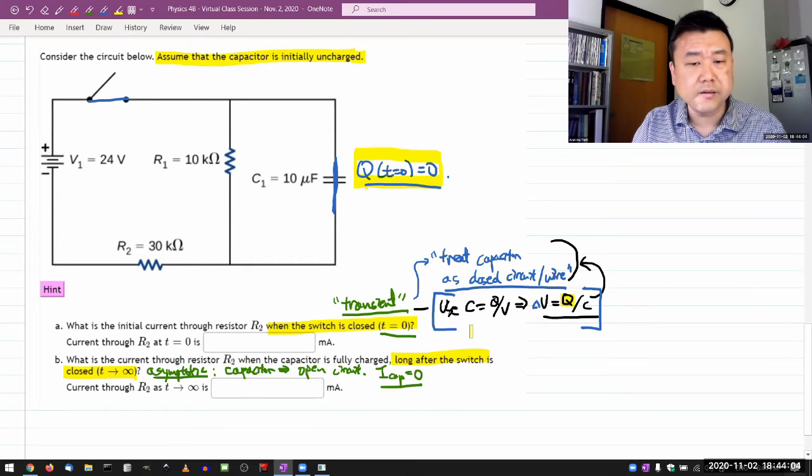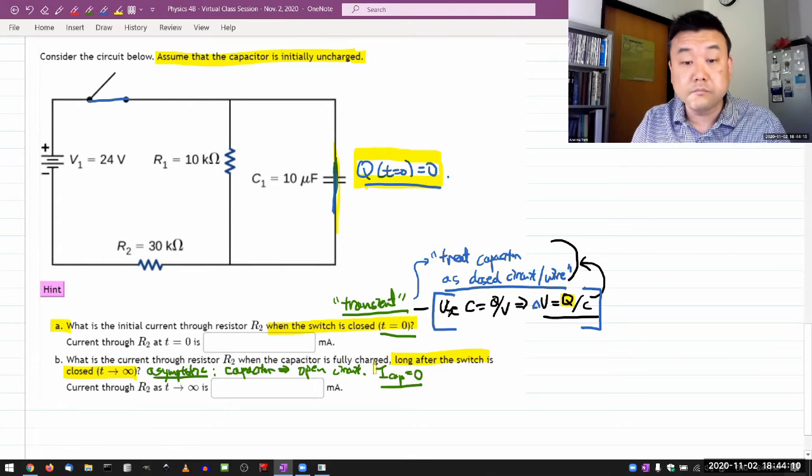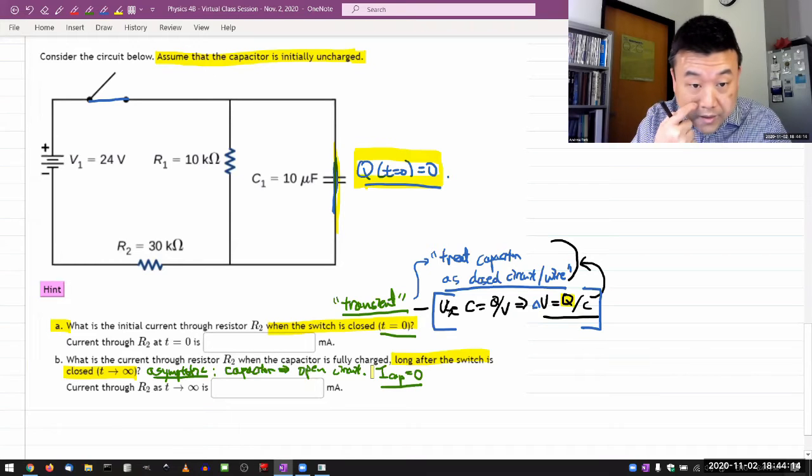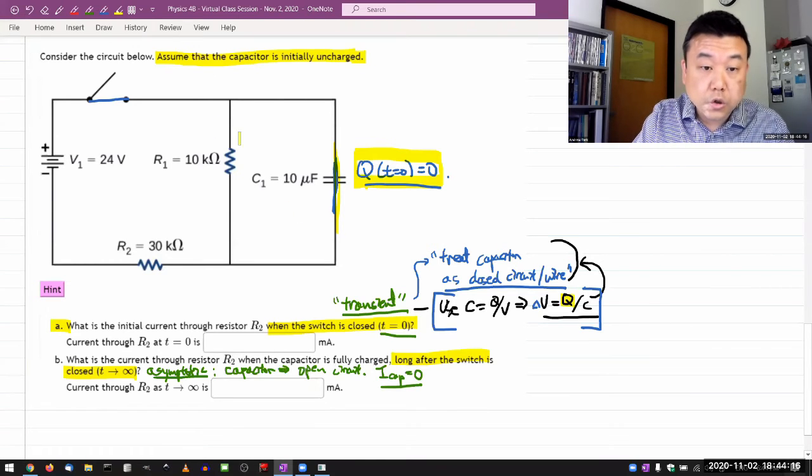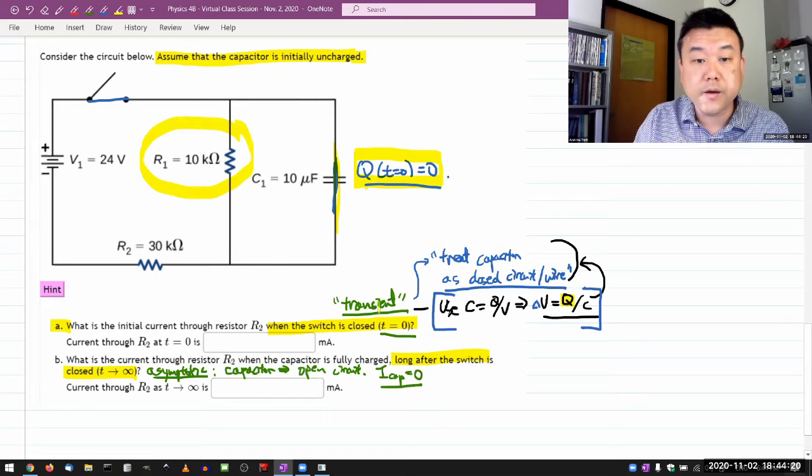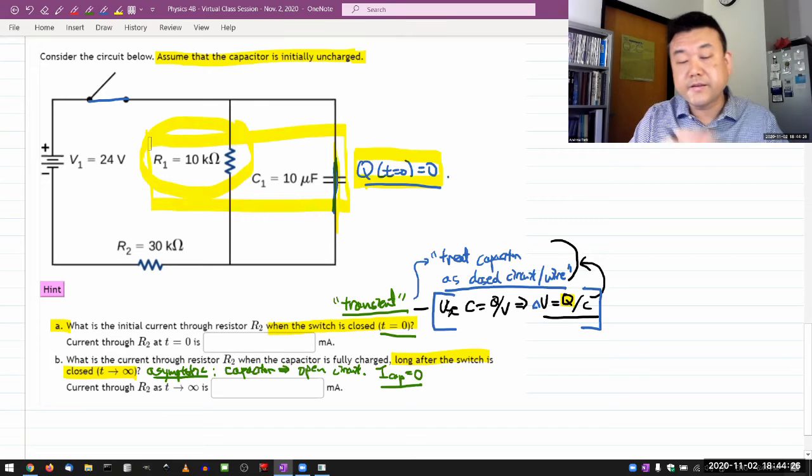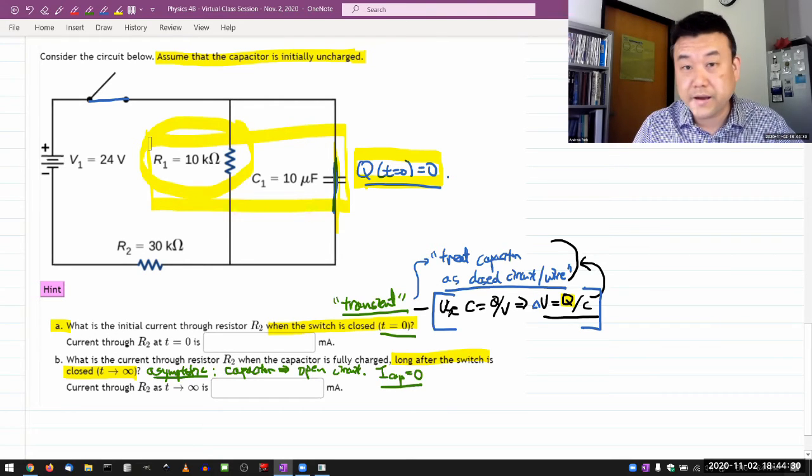So, we are saying, for the purpose of part A, we are treating the capacitor as a straight piece of wire, which means, I guess, no voltage change across it. Oh, then I see what it does. It shorts out the resistor R1, or you can think of it this way. Resistor R1 is in parallel with the capacitor C1. And at this moment in time, the capacitor basically has zero resistance.